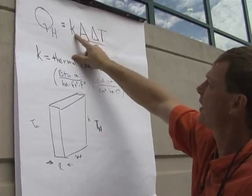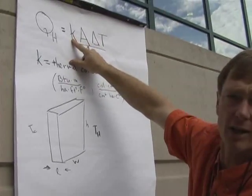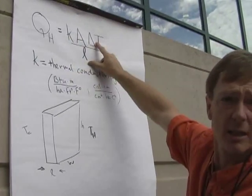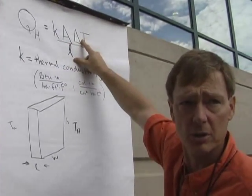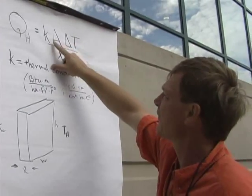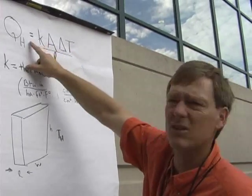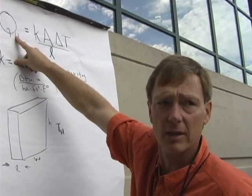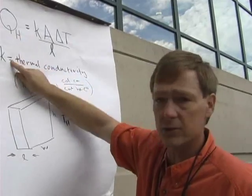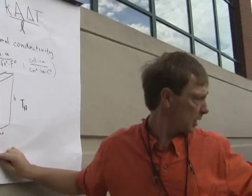So these factors — thermal conductivity, area, and temperature difference — are all directly proportional. If I double any one of them, I double the heat transfer rate. Let's do an example and look at this wall right here.